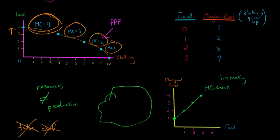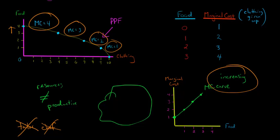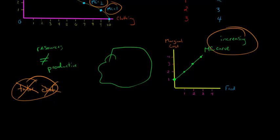That explains why we have an increasing marginal cost: as we move along the curve, not all resources are equally productive. If we could equally trade off resources — hypothetically, if everybody was equally good at making food and equally good at making clothing — then the PPF wouldn't have that bowed-out shape. It would be a straight line.